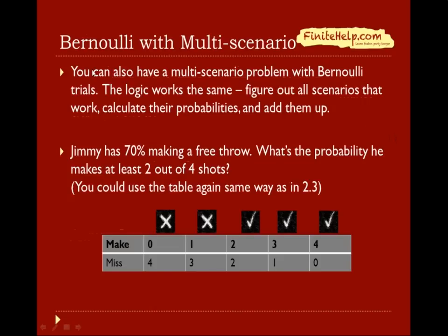As with combination and permutation problems, you can also have multi-scenario problems with Bernoulli trials. The logic works exactly the same — you figure out all the scenarios that work, calculate each individual probability, and add them up. Similarly, you can take 1 (the total probability) minus the ones that don't work. Here we're going to see an example.